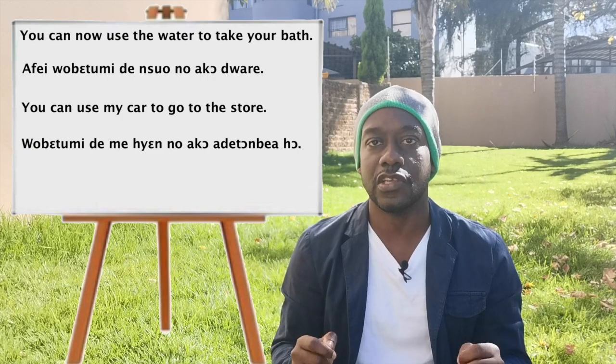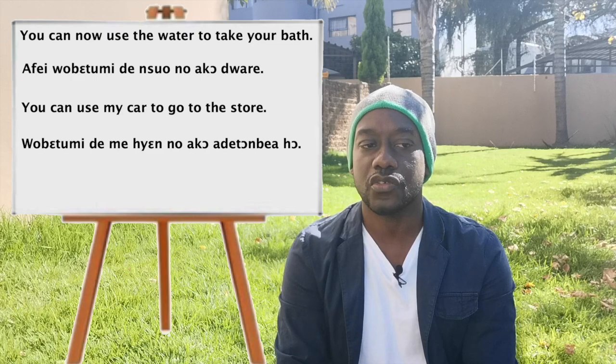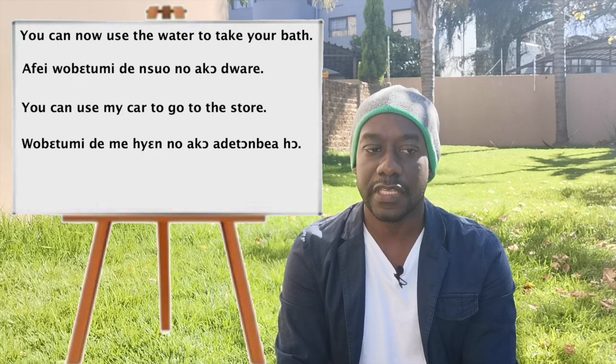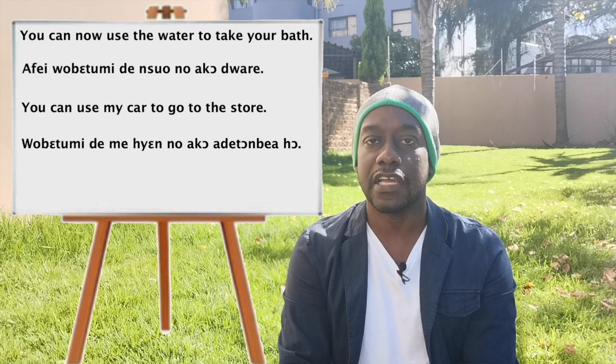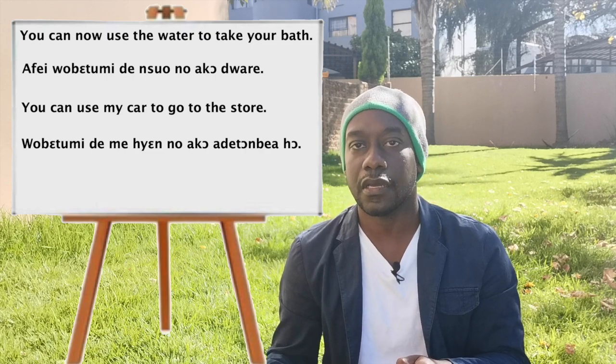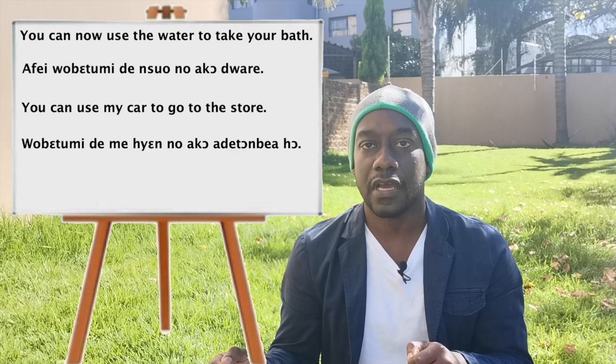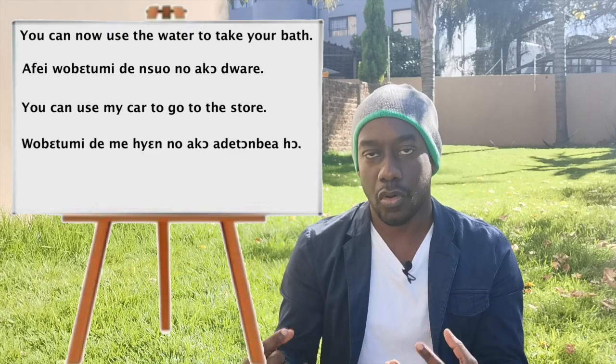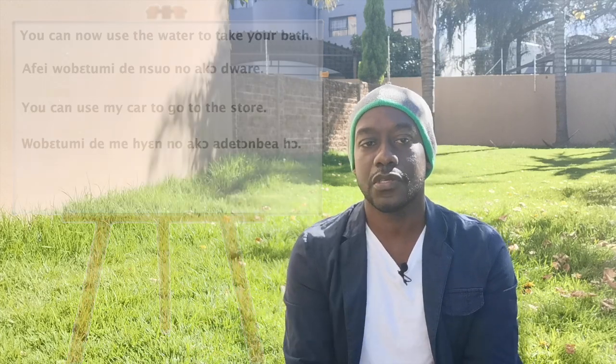The second sentence Lionel wanted: 'you can use my car to go to the store.' In Chi that is: 'ube tumi de meshen nu ako adiktong biya ho.' Ube tumi is 'you can', de meshen is 'use my car', nu ako is 'go to', adiktong biya is the store/shop, and ho means 'there at the shop.' The literal meaning of 'use' in Chi is 'fi', but we derive it from the sentence itself.